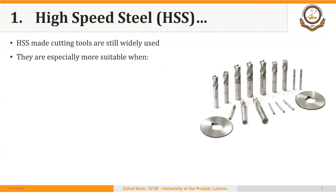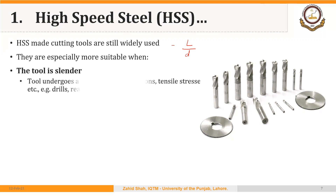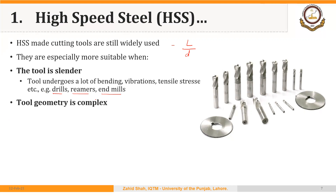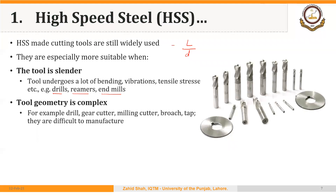HSS cutting tools are still very widely used and are especially more suitable under three conditions. First, when the tool is slender — for example, if the tool has a higher length-to-diameter ratio — HSS is more suitable because such tools undergo bending, vibrations, and tensile stresses. Examples include drills, reamers, and end mills. Second, when the tool has complex geometry, such as drill bits, gear cutters, milling cutters, broaches, and taps.